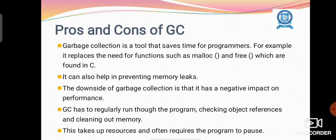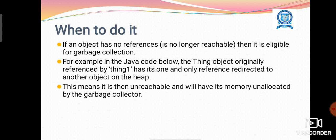Garbage collection is a tool that saves time for programmers. For example, it replaces the need for functions such as malloc and free, which are available in the C language. If an object has no references, then it is eligible for garbage collection. That object can be removed from memory so that the memory can be made available to the next data item.